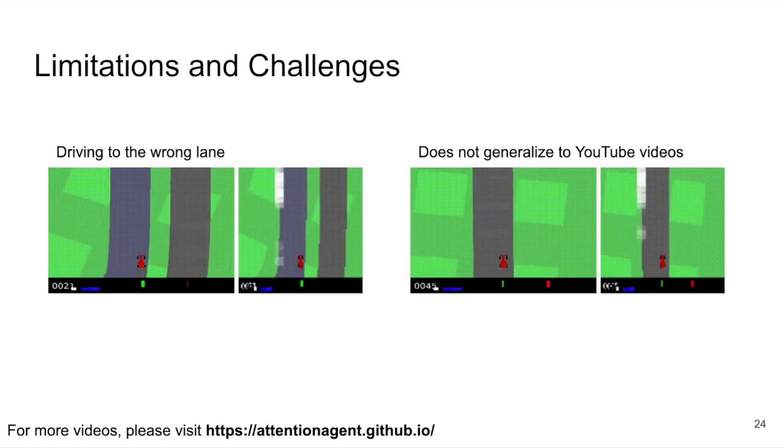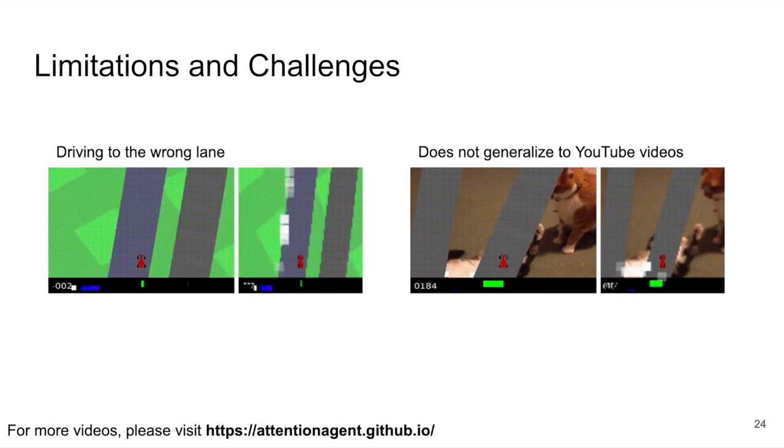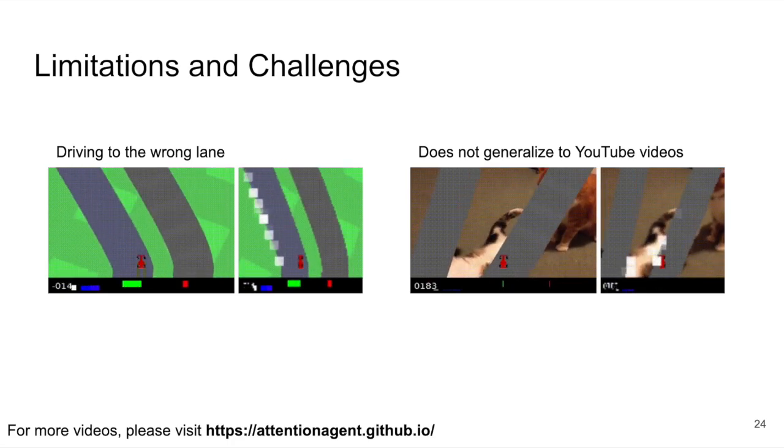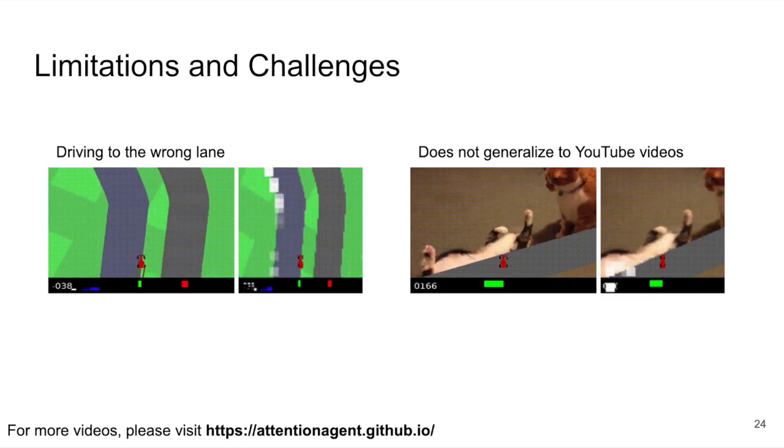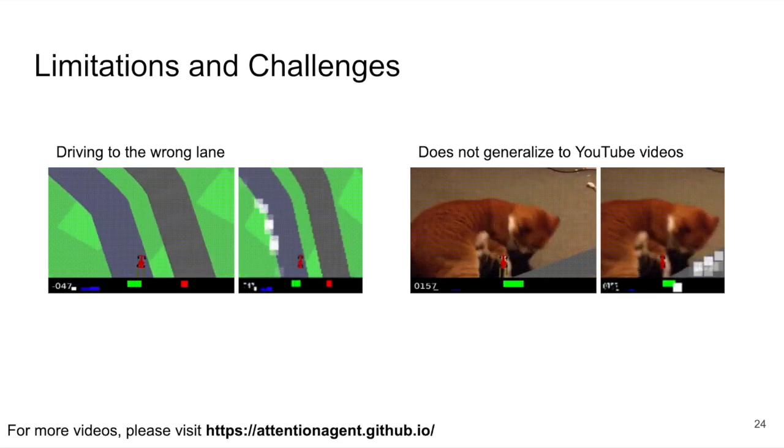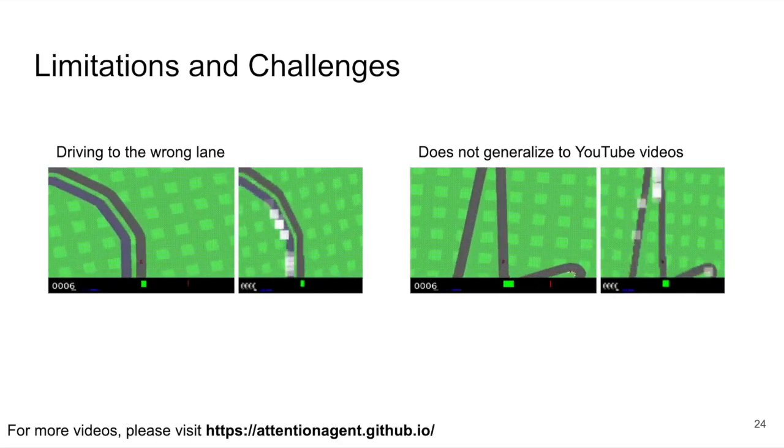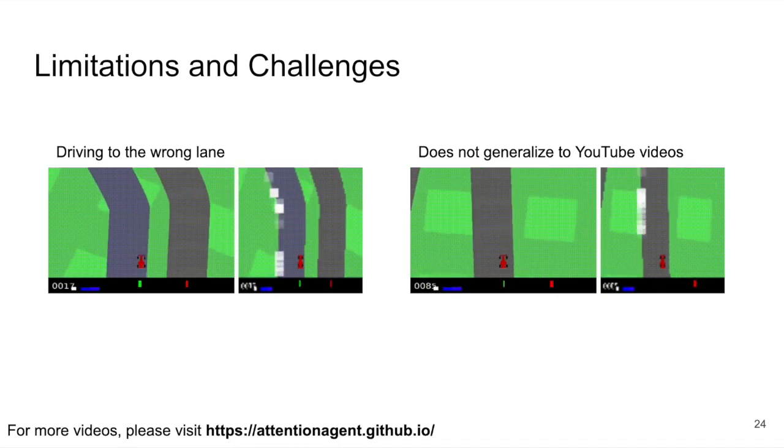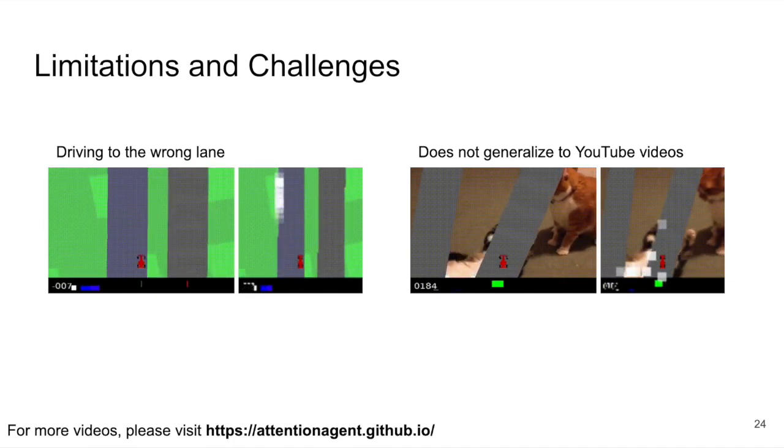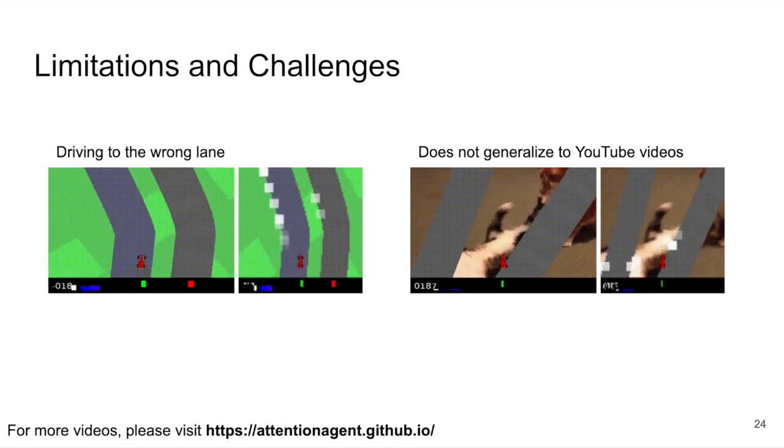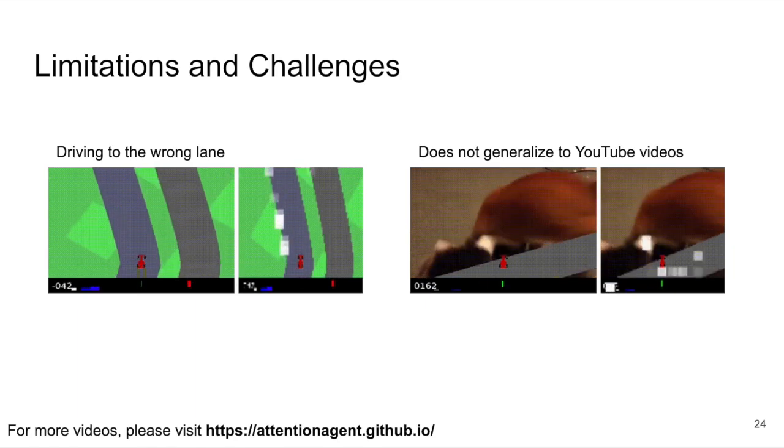While the method presented so far is able to cope with various out-of-domain modifications of the environment, there are limitations to this approach and much more work needs to be done to further enhance the generalization capabilities. For instance, much of the extra generalization capability is due to attending to the right thing rather than from logical reasoning. As is demonstrated by the animation on the left, if we modify the environment by adding a parallel lane next to the true lane, the agent attends to the other lane and drives there instead. Also, we want to highlight that the self-attention visual module does not generalize to cases where dramatic background changes are involved. For example, we modify the background of the car racing environment and replace the green grass background with a YouTube video in the animation on the right. In this case, the agent trained in the original environment fails to generalize.